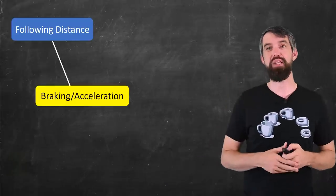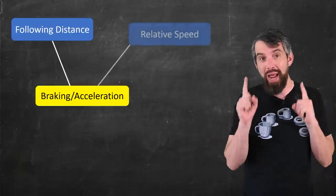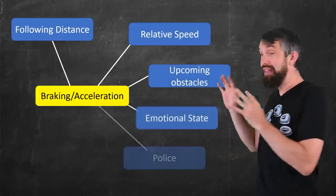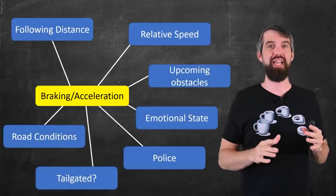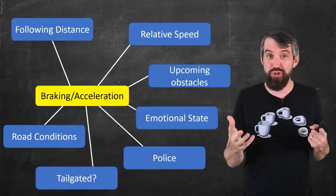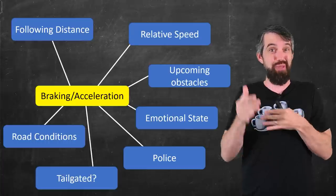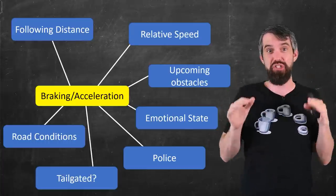What other factors might I consider? Well, one other might be the relative speed of the two cars. If the car in front of me is going much slower than I am, I'm going to have to slow down, otherwise I'm going to run into them. If they're driving much faster than I have, that following distance is going to increase, and I could accelerate for a while. So those are two factors, but you can probably think about a whole bunch of other ones, whether it's upcoming obstacles, your emotional state, where there's police on the road, whether you're being tailgated, what the conditions of the road are.